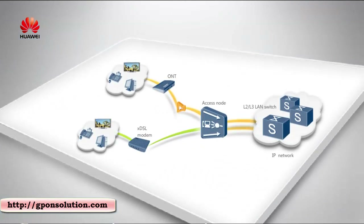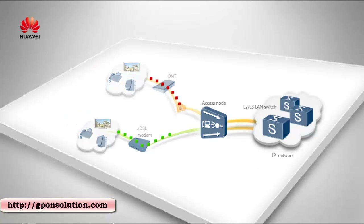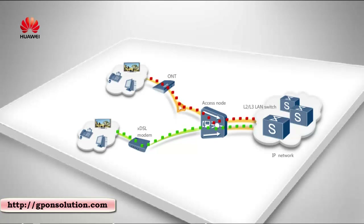In an IP network, access devices are used to provide VoIP, IPTV, and HSI services for home and business users. In the downstream direction, the access devices provide DSL access modes for traditional broadband users and also provide FTTX access for users who require higher bandwidths.